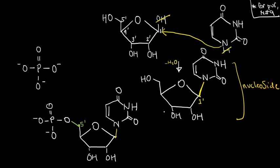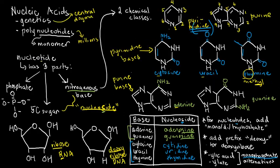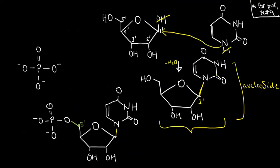How do we call this? We call the base uracil. But once it becomes a nucleoside, all we have to do is replace the suffix. For uracil, since it's a pyrimidine, we add '-idine.' So despite the fact it looks quite intimidating, the entire name of this thing is just uridine.